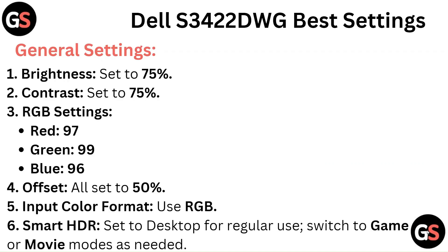Dell S3422DWG Best Settings — General Settings: Brightness set to 75%, Contrast set to 75%. RGB Settings: Red 97, Green 99, Blue 96, Offset all set to 50%. Input Color Format: Use RGB. Smart HDR: Set to Desktop for regular use, switch to Game or Movie modes as needed.